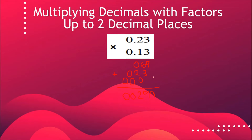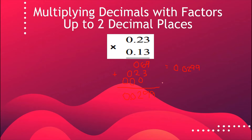After we already have our product, that's the time we're going to place our decimal point. Since we have here — how many decimal places do we have? We have one, two, three, four — so we have four decimal places. We're going to move our decimal point four places to the left: one, two, three, and four. So our answer for this one is 0.0299. That's how we multiply factors with two decimal places.